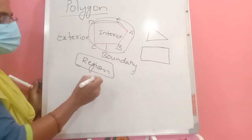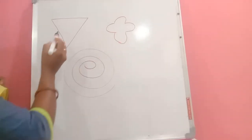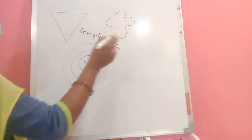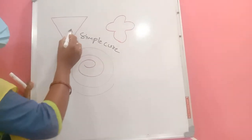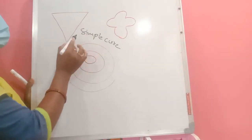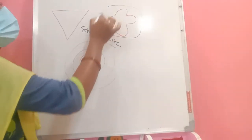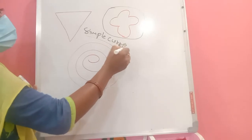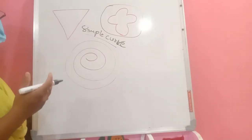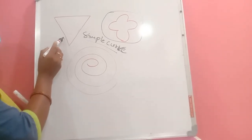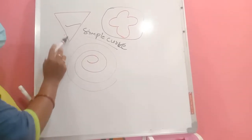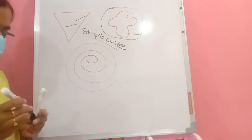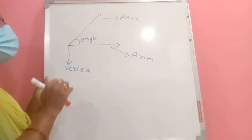A straight line is also called a simple curve. Some figures are made with simple curves, and others are not. You may get a question asking which of the following are simple curves — some types of figures cannot be called simple curves.